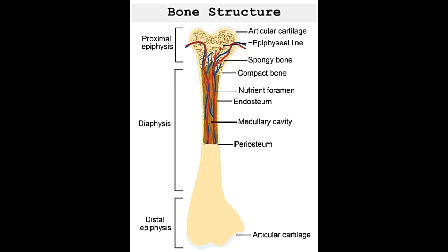The long bones are composed of the diaphysis, epiphysis, epiphyseal/growth plate, periosteum, and endosteum. While the diaphysis is the shaft that makes up the long axis of the bone, epiphysis refers to the ends of the bone. The ends are covered by a thin layer of compact bone and are wider than the shaft. At the junction of the diaphysis and epiphysis lies the hyaline cartilage.